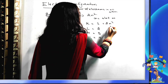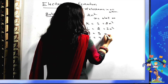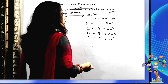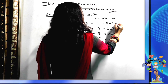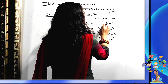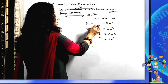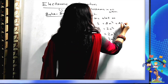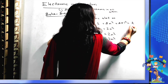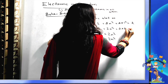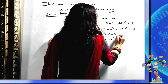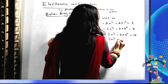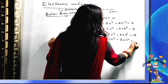By putting values into the formula 2N², we can find the maximum number of electrons in each orbit. For the K shell, N=1: 2×1²=2. For L shell, N=2: 2×2²=8. For M shell, N=3: 2×3²=18. For N shell, N=4: 2×4²=32, and so on.